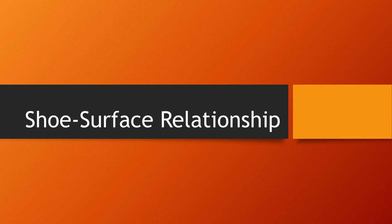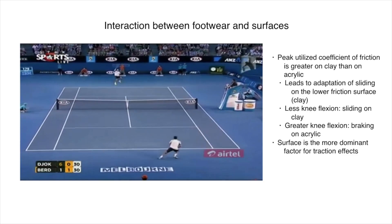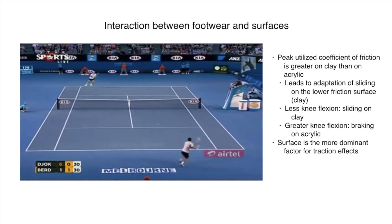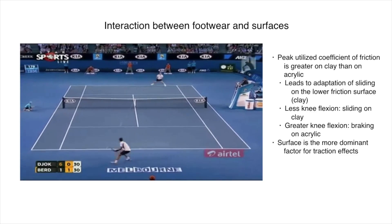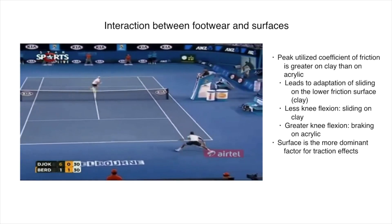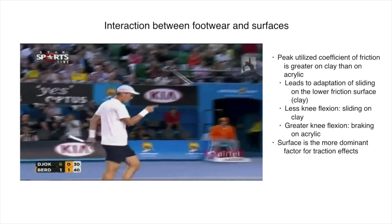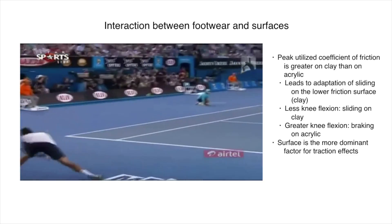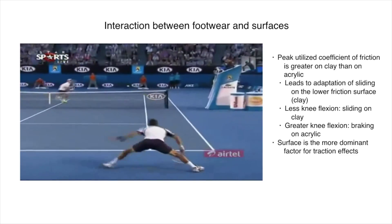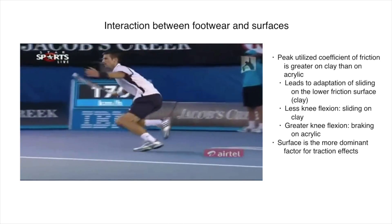It's important to begin to understand the relationship between the shoe and surface in tennis, as well as the shoe design itself and how these variables affect the tennis player. Interaction between footwear and surfaces influences the forces experienced by a tennis player. Regardless of the type of shoe used, peak utilised coefficient of friction is greater on clay than on hard court acrylic. As a result, tennis players adapt to the level of utilised friction by sliding on the low friction surface. Less knee flexion facilitates sliding on clay, whereas greater knee flexion contributes to braking on the hard court. The surface, rather than the shoe, is the most dominant factor when considering effects of traction on the biomechanics of tennis players.